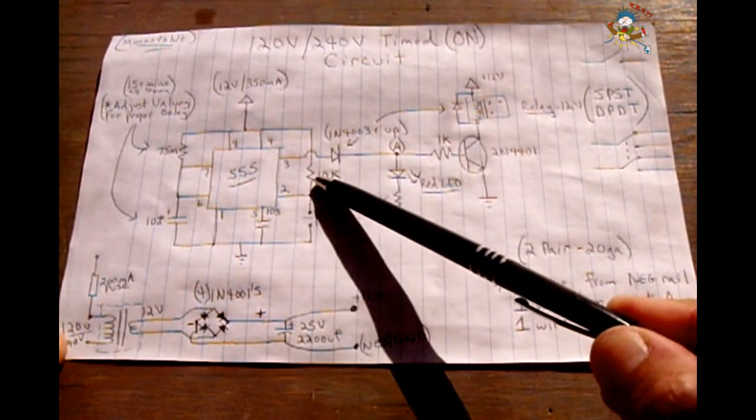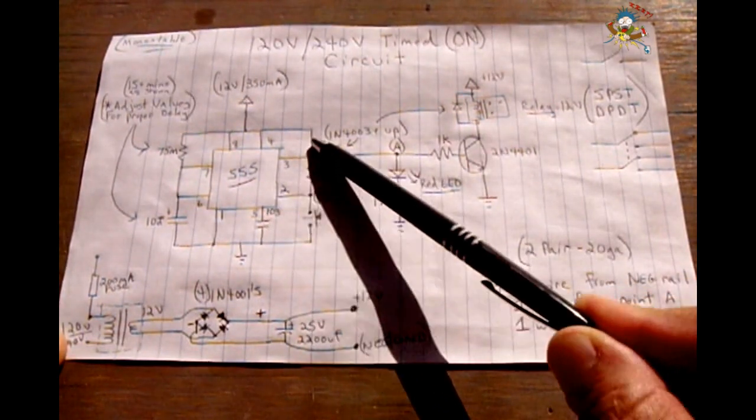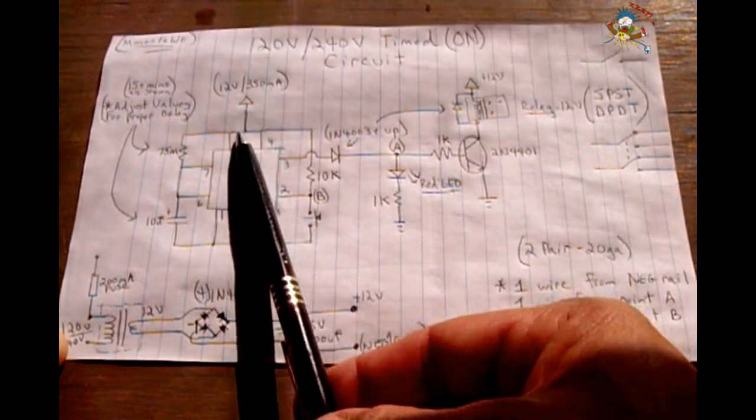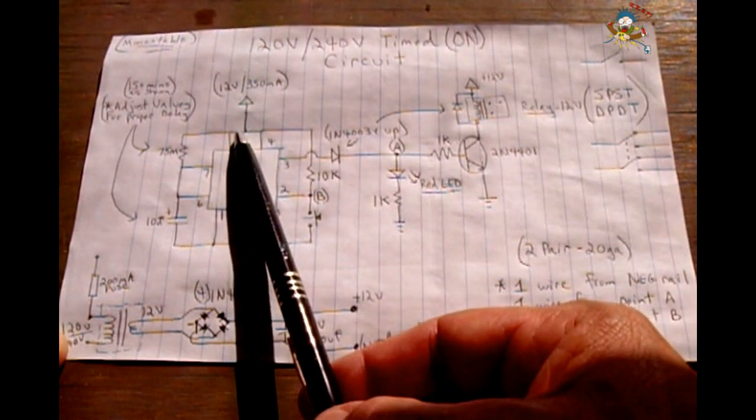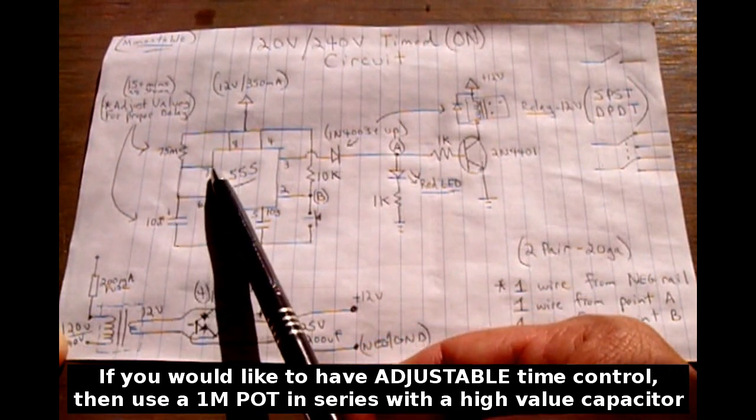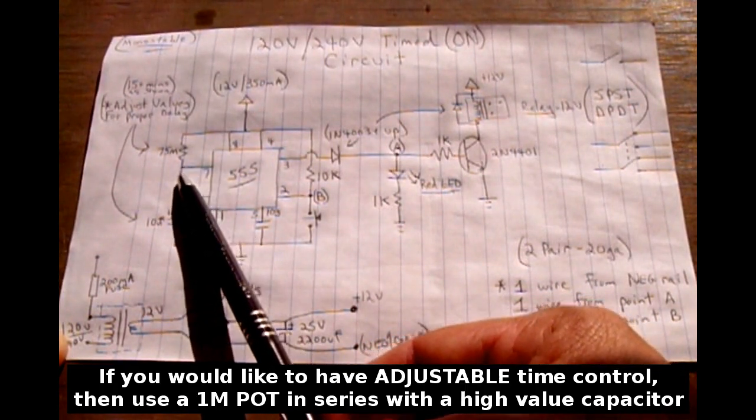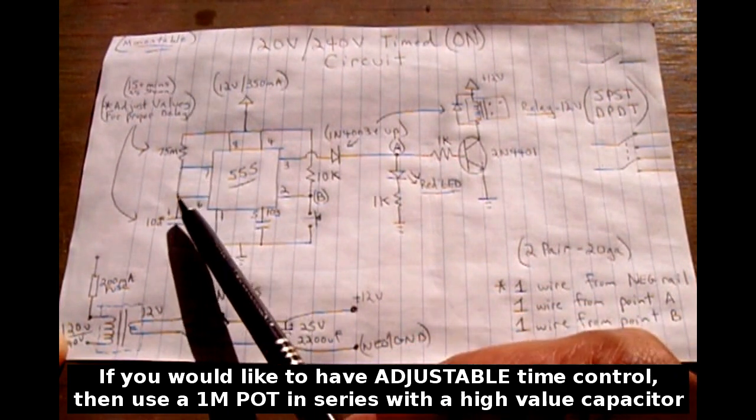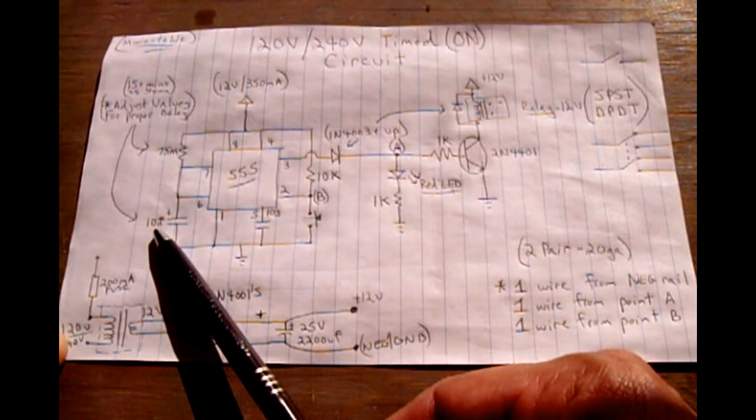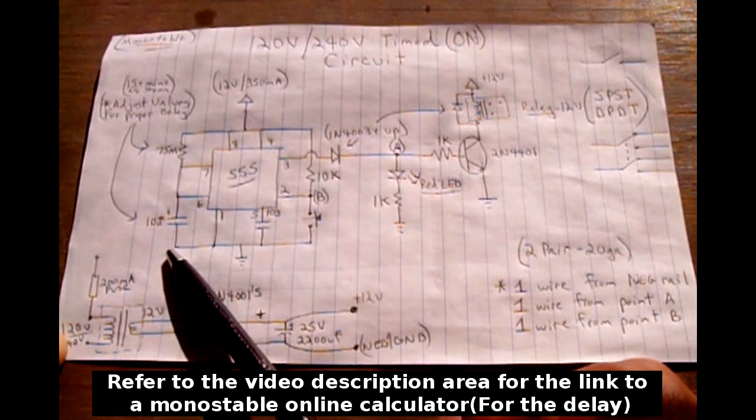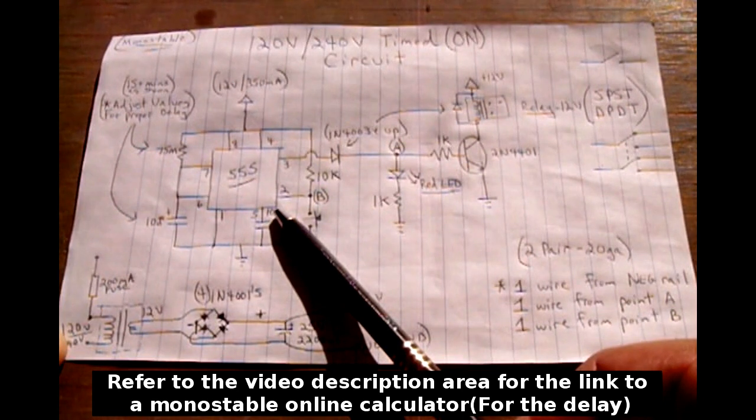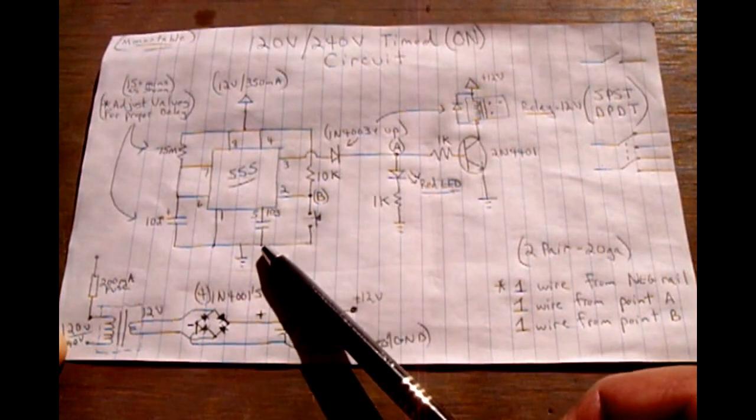You have a 10K resistor, quarter watt, that's between pin number 2 and pin number 4. Pin 4 and 8 are connected together, and between the top rail, the positive rail of 12 volts, and the pin 8 and 4, it goes to the resistor, in my case a 75 meg, which ties into pin 7. Pin 7 goes into pin 6, just jumper those together, and from pin 6 you have a 10 microfarad, or whatever you may desire for the time frame you're looking for, going between pin 6 and the negative rail. Pin 1 to the negative rail, and a 103 or a 0.01 microfarad between pin 5 and the negative rail as well.